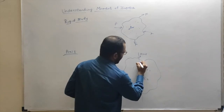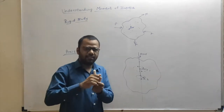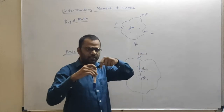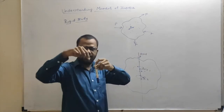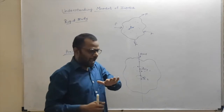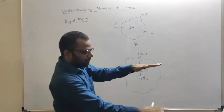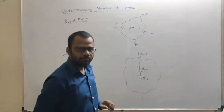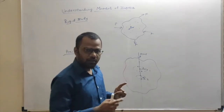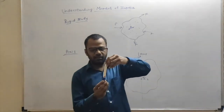Every particle except those exactly on the axis itself will perform circular motion. Particles on the axis have zero radius — they don't perform any circular motion. All other particles away from the axis perform circular motion with different radii, and all these circular motion planes are parallel to each other.